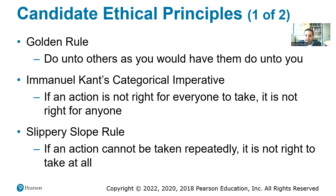Kant's Categorical Imperative states that if an action is not right for everyone to take, then it is not right for anyone. For example, if every senator lies like George Santos did, we lose trust in our senators. If every employee steals from their company, the company would go bankrupt and there would be no business anymore. That is what we mean by Kant's Categorical Imperative.